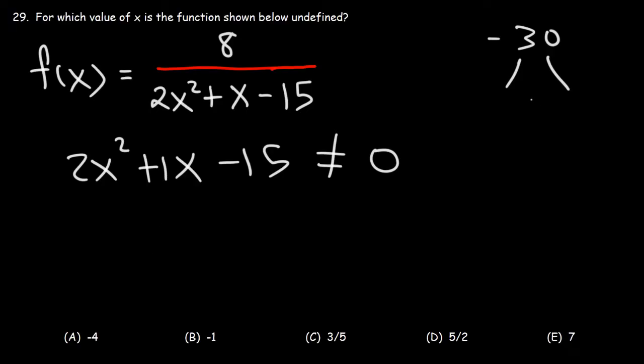So two numbers that multiply to 30 would be 6 and 5. Now we need to use negative 5 and positive 6 because these two numbers multiply to negative 30 but add to positive 1. So let's replace 1x with 6x and negative 5x.